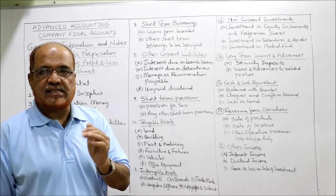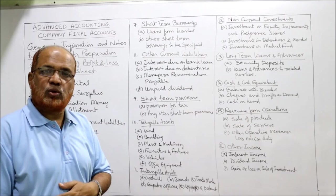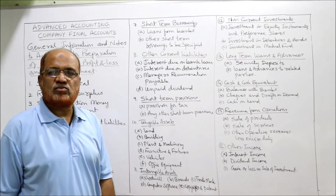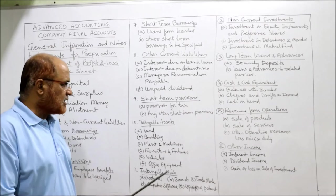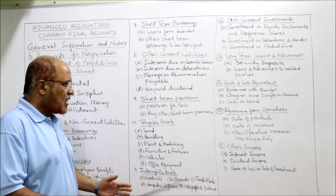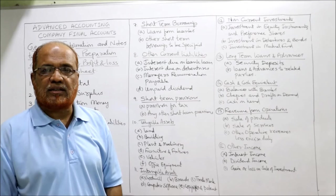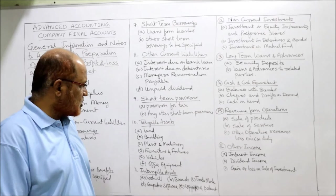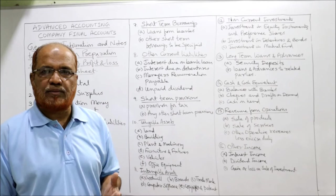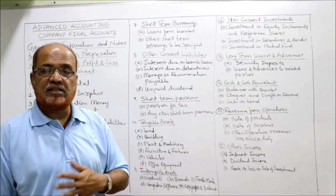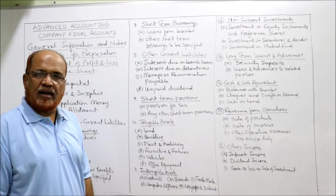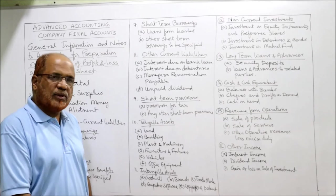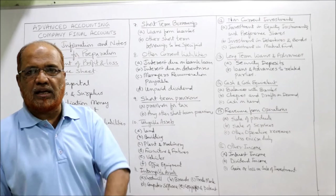Now we come to the asset side. The first item is non-current assets. Under non-current assets, fixed assets are classified into tangible assets and intangible assets. Tangible assets are those which can be seen, touched, and have physical existence - examples are land, building, plant and machinery, furniture, vehicle, and office equipment. All these details should be shown in the notes; only the total tangible asset figure appears in the balance sheet. Intangible assets cannot be seen or touched but are real assets - examples are goodwill, patent rights, copyright, brands, and computer software. All details should be in the notes, with only the total shown in the balance sheet.